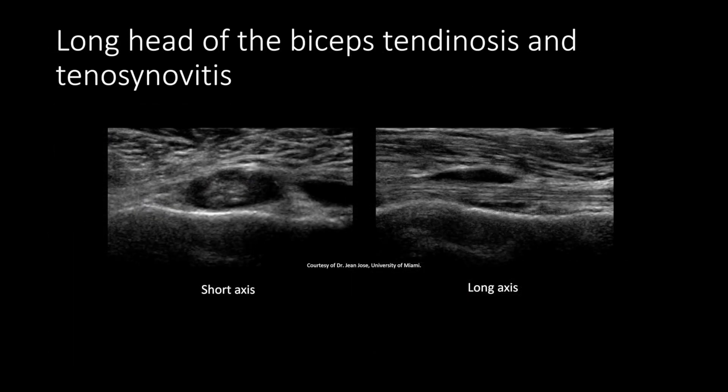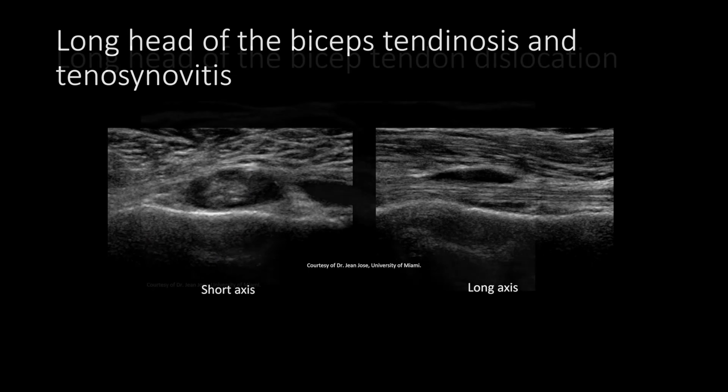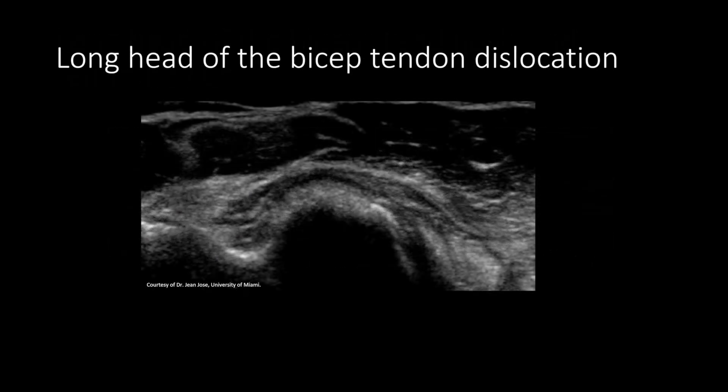We can see both short and long axis views of the long head of the biceps tendon, which is thickened with slightly decreased echogenicity, as well as fluid due to inflammation of the synovial membrane surrounding the tendon. This is referred to as tendinosis and tenosynovitis. Here we have dislocation of the long head of the biceps tendon, with the echogenic tendon outside of the bicipital groove.